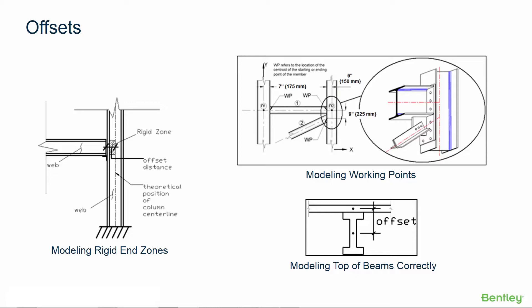We can use the offset command for a couple of different scenarios. The first scenario is using the rigid offset specification to model a rigid end zone. Beams and columns are modeled as line elements in STAAD Pro and they are assumed to meet at a point in space defined by the intersection of their center lines. By comparison, in the physical structure, a beam might be attached to the face of a column and not to the center line of support. This may create a rigid zone at the connection where very little relative deflection will occur between the face of support and the center line of support within this zone.